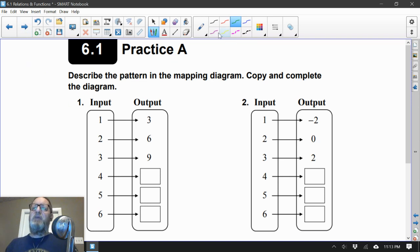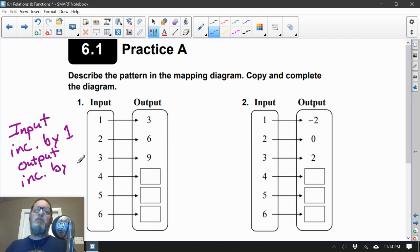Number 1 on this page. Describe the pattern in the mapping diagram. Copy and complete the diagram. Well, let's see what's going on here. The inputs are increasing by 1. What's happening with my outputs? 3, 6, 9. So the outputs are increasing by 3.